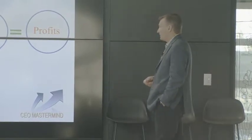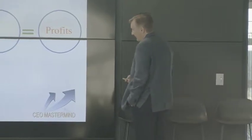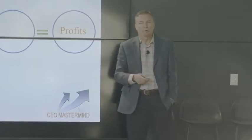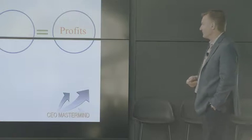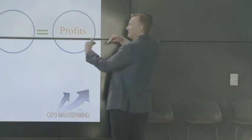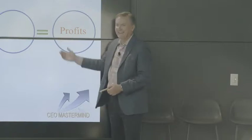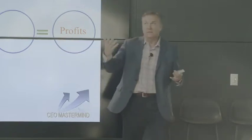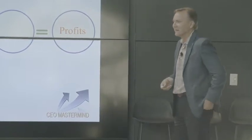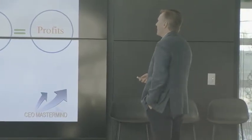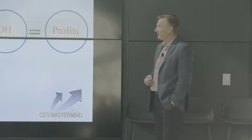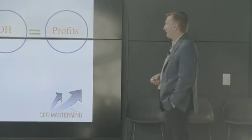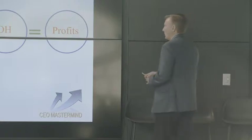This formula from Dental Intel is: visits times production per visit times collection percentage, minus overhead, equals profits. Pretty simple formula — five boxes — and that's really all you need to know.